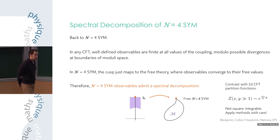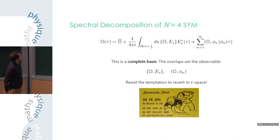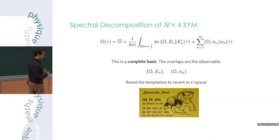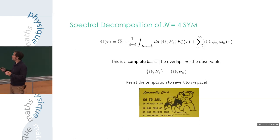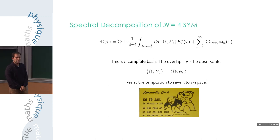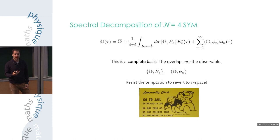Why are the observables square integrable? Because they don't diverge at the cusp — in the interior they're finite, the only place they could diverge would be at the cusp, but the cusp is the free theory and we know how they behave there. Let me underscore the use of having found a complete basis: the overlaps are the observable. It's like going to momentum space — resist the temptation to revert to tau space. We can ask in spectral space whether things look nice, and if they do, you're onto something. A complete basis lets you systematically classify the complexity of the coupling dependence.